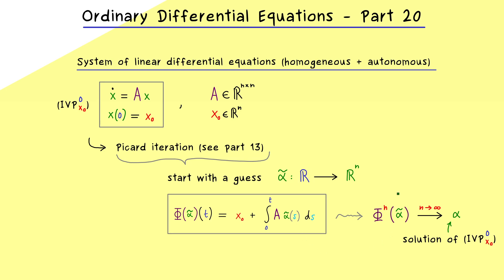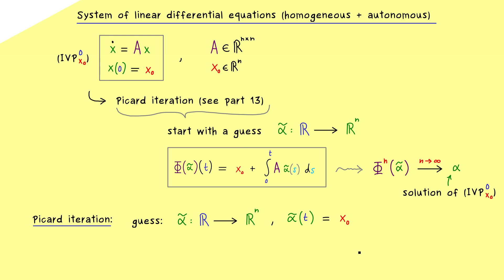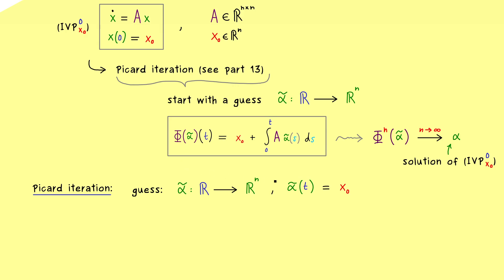Now let's see what happens to the general system in the Picard iteration. The first guess for the solution of the initial value problem is always the constant solution, which definitely satisfies the initial condition. And then we can do the first step in the Picard iteration — we apply our map phi to alpha-tilde, which means we calculate one integral. But this is not really complicated, because everything inside the integral is constant. So it's just this matrix times the vector times t. Since both parts have x0, we can factorize it as the n times n identity matrix plus t times the matrix A, multiplied with our vector x0.